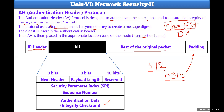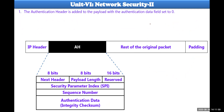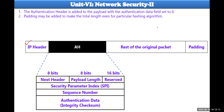That is what the authentication header covers. While stuffing this particular AH authentication header into the IP packet, certain rules and regulations must be followed. Rule number one: the authentication header is added to the payload with the authentication data field set to zero. The authentication data field will be set to zero when the packet is being processed using the AH protocol. If it is 1, obviously that would be the ESP protocol.